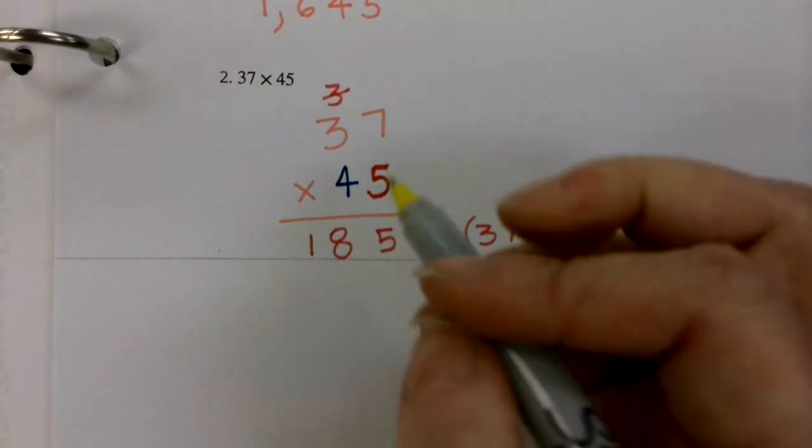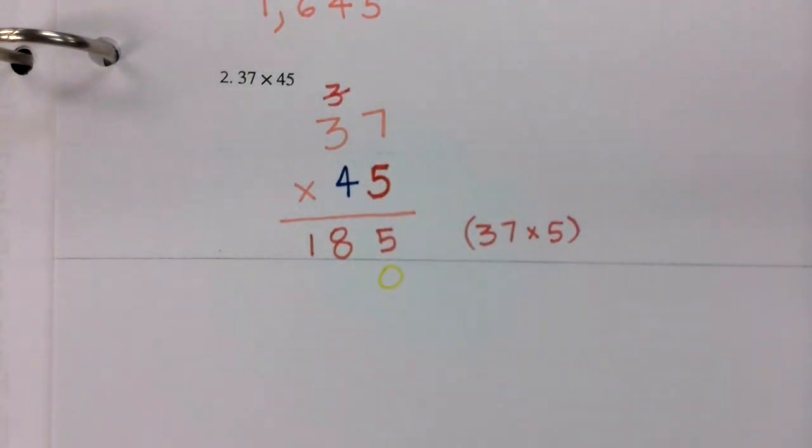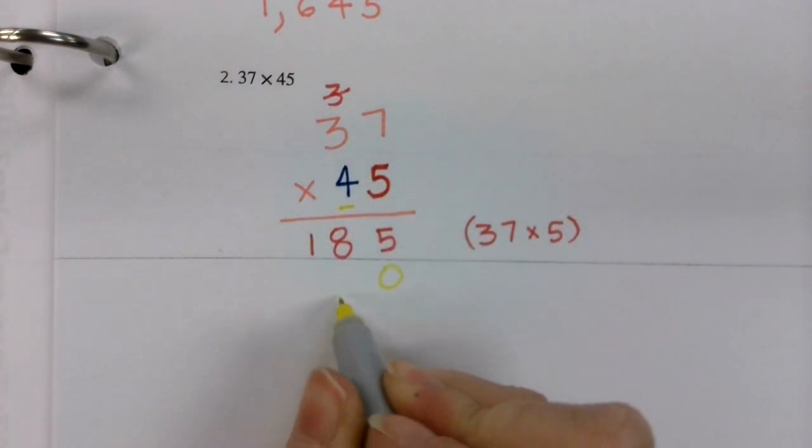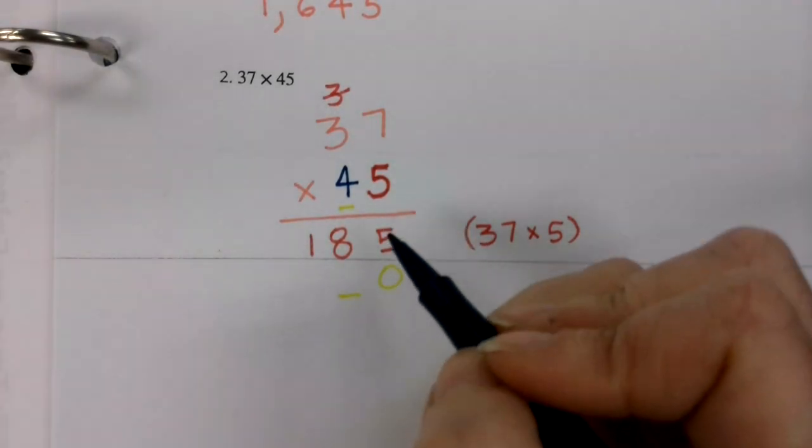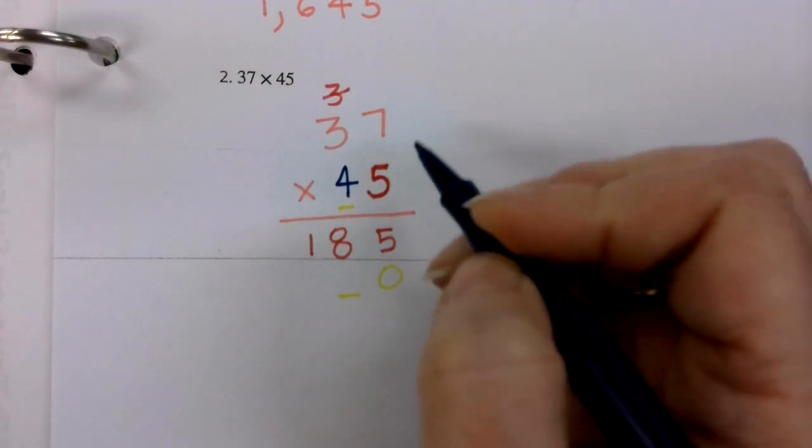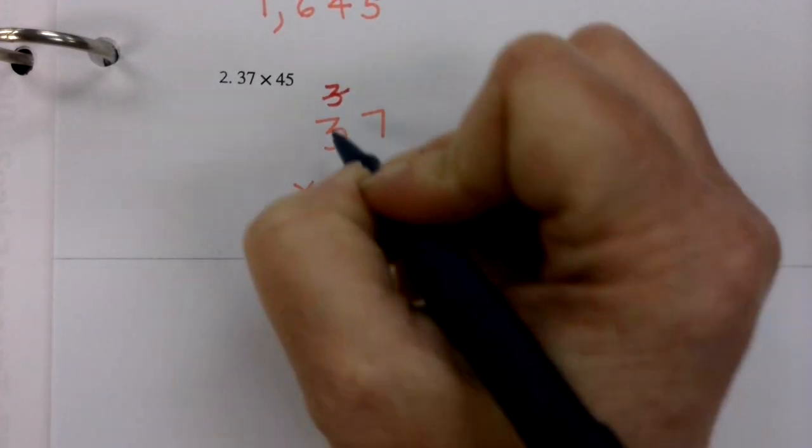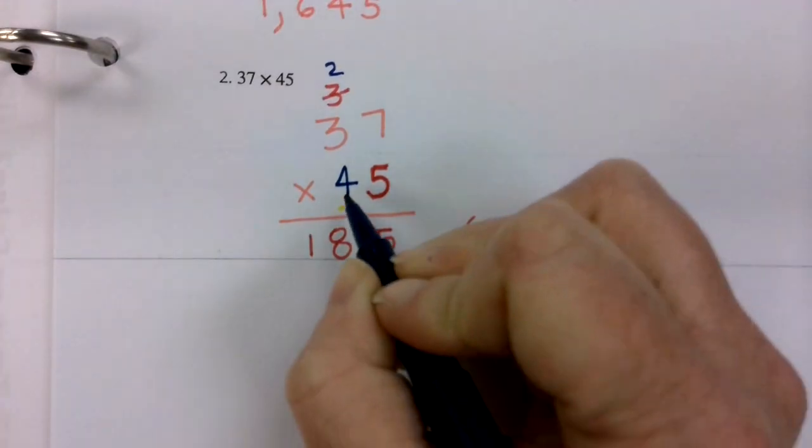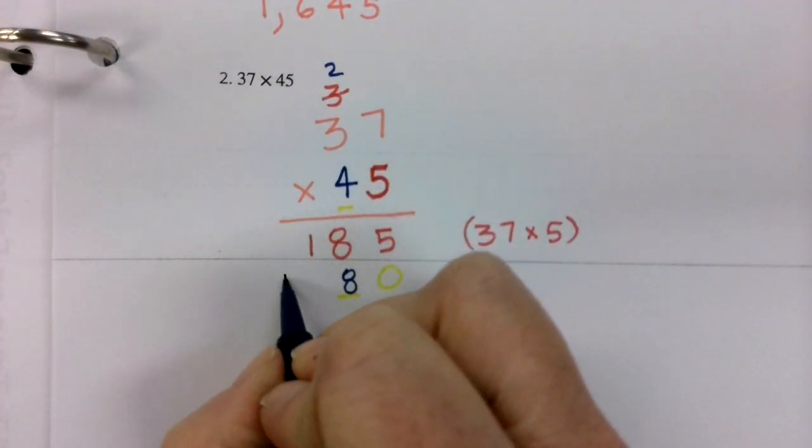And I'm going to remember my placeholder zero. It's really not magic. It's just math. This four is in the tens place. So my answer must start in the tens place. Here we go. We have our four times seven is 28. So here is my eight. And I'm going to carry this two. Four times three is 12. Plus two more is 14.